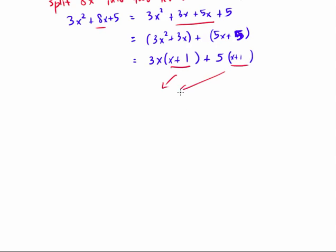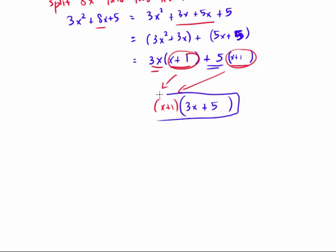x + 1 is in both locations, so you factor it out, and it's (x + 1) times what's left. Well, when you take out this x + 1, 3x is left. When you take out this x + 1, plus 5 is left. So your final factorization is (x + 1)(3x + 5). And you could FOIL that out to check that that really is equal to 3x² + 8x + 5.